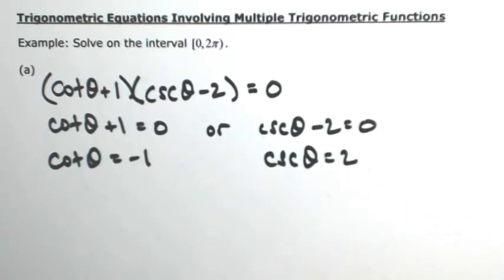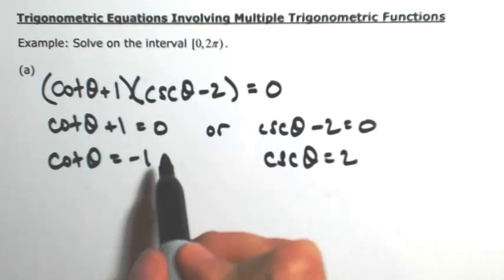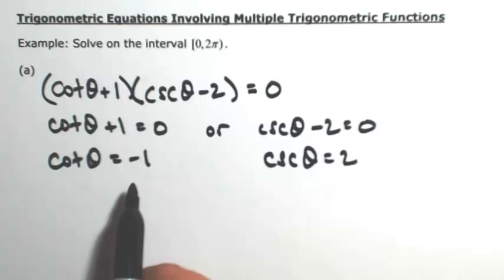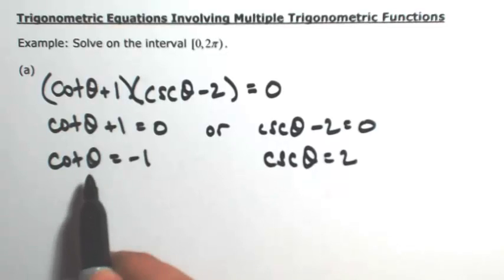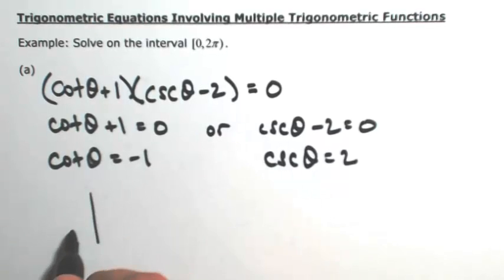Here we're looking for the angle or angles whose cotangent is negative 1. Keep in mind that negative 1 is just going to be the x coordinate over the y coordinate. We're talking about cotangent, so we're looking for where the x and the y coordinates are opposite.